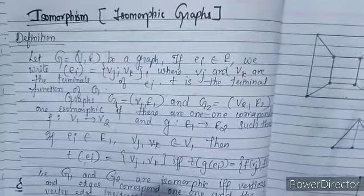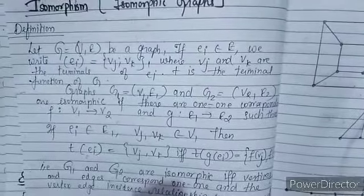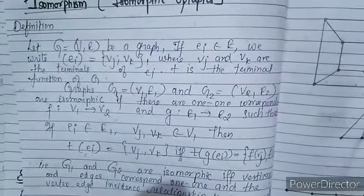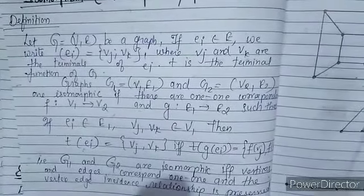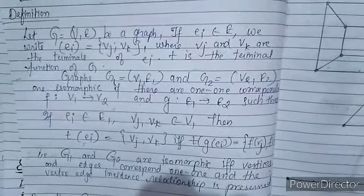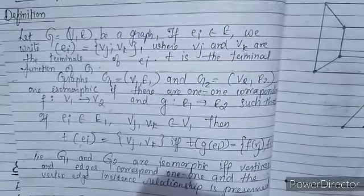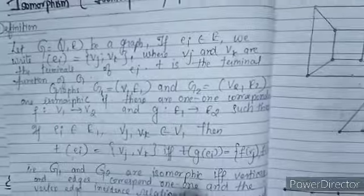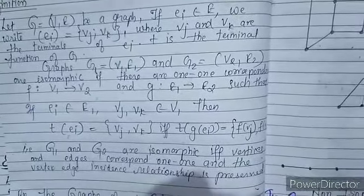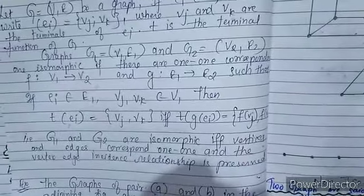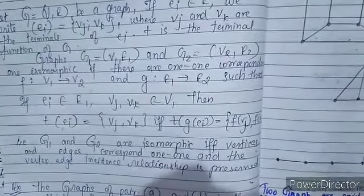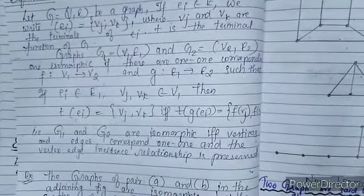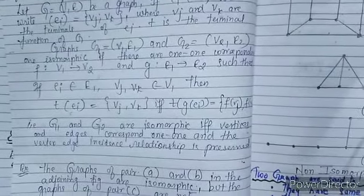The next topic is isomorphism — isomorphic graphs. Definition: Let G = (V, E) be a graph. If Ei belongs to E, we write Ei = (Vj, Vk) where Vj and Vk are terminals of Ei. Graphs G1 = (V1, E1) and G2 = (V2, E2) are isomorphic if there are 1-1 correspondences F: V1 → V2 and G: E1 → E2, such that the vertex-edge incidence relationship is preserved. That is, G1 and G2 are isomorphic if and only if vertices and edges correspond 1-1 and the vertex-edge incidence relationship is preserved.